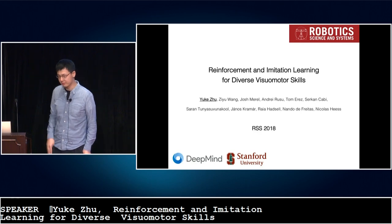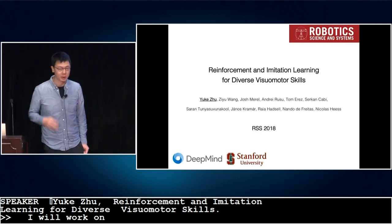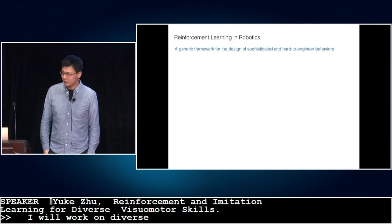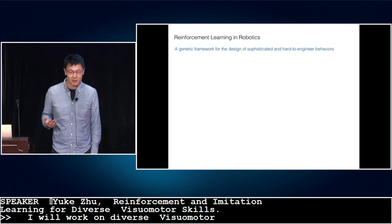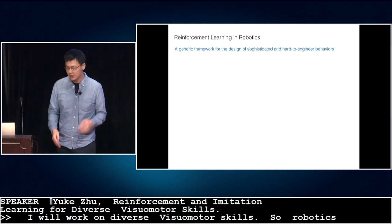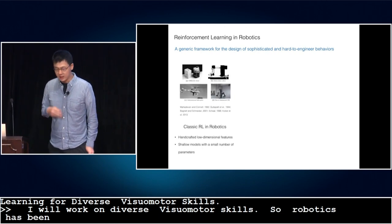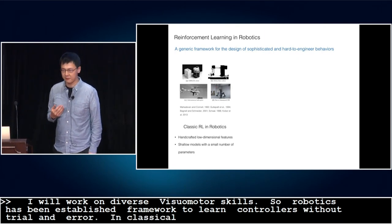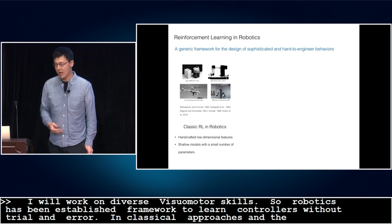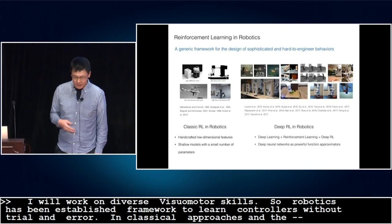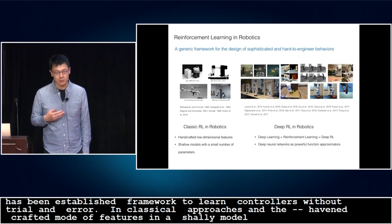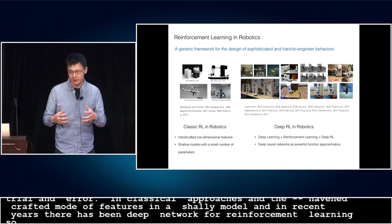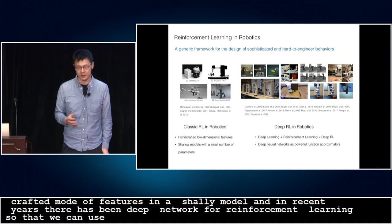Hi everyone. I'm Yuke Zhu, a PhD student from Stanford University, and today I'm going to talk about our work on deep visual motor learning. This is a joint work with my colleagues from DeepMind when I was a summer intern last year. In robotics, reinforcement learning has been an established framework to learn controllers via trial and error. In classical approaches, they usually assume handcrafted low-dimensional features and a shallow model. In recent years, there has been growing interest in using deep neural networks for reinforcement learning to learn more complex behaviors end-to-end.